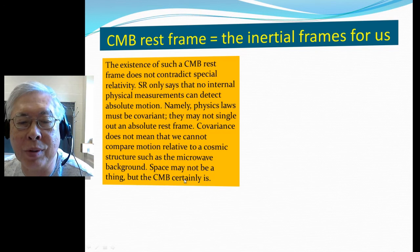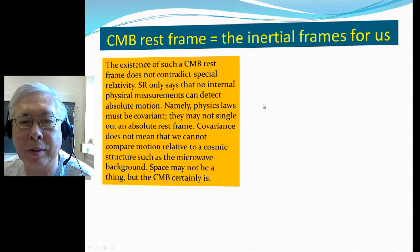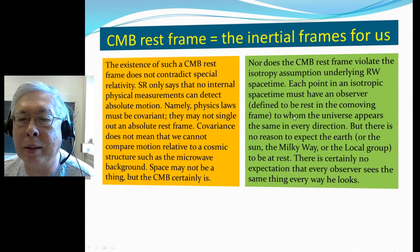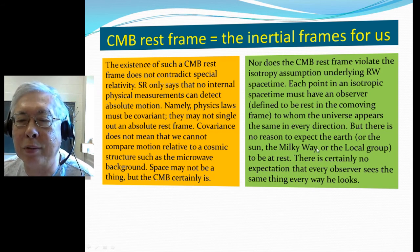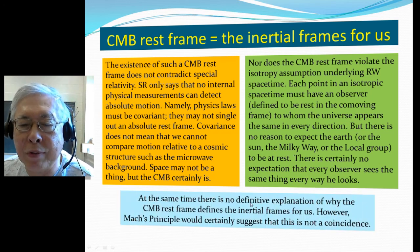Space may not be thin, but the CMB certainly is. The physical equations should be independent of coordinates, but the CMB is a particular physical thing and could define particular coordinates. Nor does the CMB rest frame violate the isotropy assumption under Robertson-Walker spacetime, because each point in isotropic spacetime must have an observer defined by the respective comoving frame, to whom the universe appears the same in every direction. But there is no reason to expect the Earth, Sun, or local group to be at rest, and certainly no expectation that every observer sees the same thing everywhere. And there is no definitive explanation why the CMB rest frame defines the inertial frame for us.